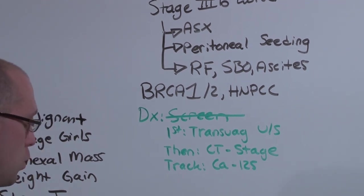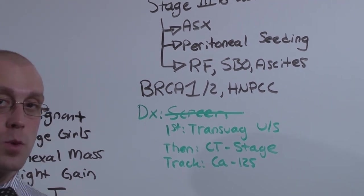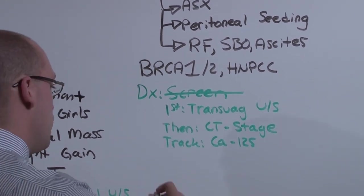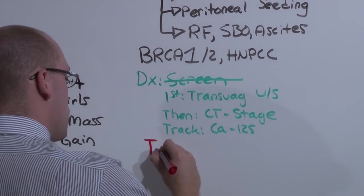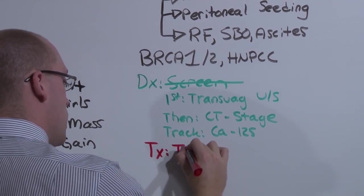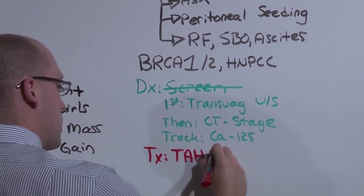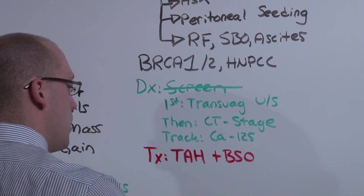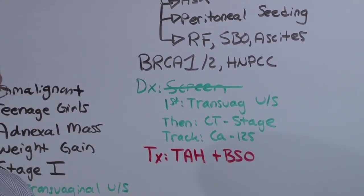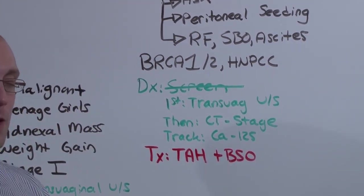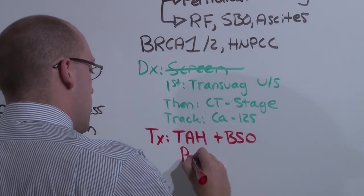Unlike germ cell tumors, which were very conservative, the treatment of these tumors is extremely aggressive. Generally, she is post-menopausal. So she does not need her GYN organs anymore. You take them all out. A total abdominal hysterectomy and bilateral salpingo-oophorectomy. Because they are usually 3B or worse, they are going to need chemotherapy with Paclitaxel.